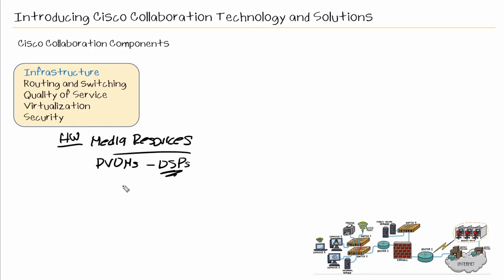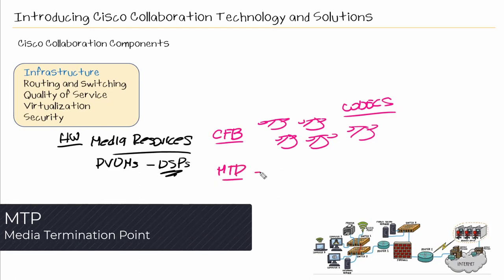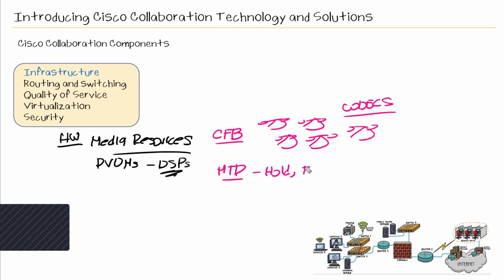So, what are some examples of media resources? We have our conference bridge. So, this is what allows us to have multiple streams combined together, so we could have a conference call, especially if these participants may be using different codecs. We also have MTPs, or media termination point, and these can provide services like hold, transfer, but they can also help with DTMF. Those are the tones that you may hear when you press a digit on your keypad. So, MTP could be used for those conversion of DTMF tones in the event that two sides are using different mechanisms for DTMF.